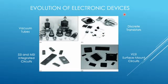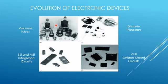Evolution of electronic devices: The first electronic devices developed were vacuum tubes. These vacuum tubes contain two types of electrodes — one is the cathode and another is the anode. The cathode emits electrons when sufficient voltage is applied, and these electrons are collected by the anode, so current flow in vacuum tubes is unidirectional. Vacuum tubes became very prevalent from 1904 to the 1940s and were used as components for designing electronic circuits.